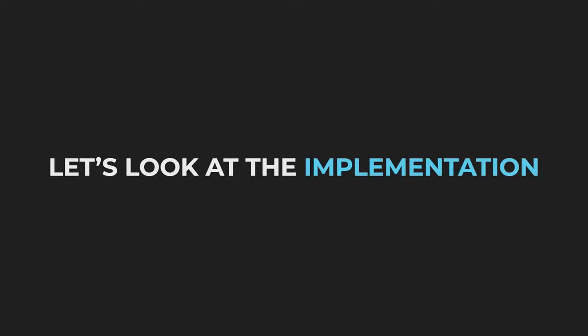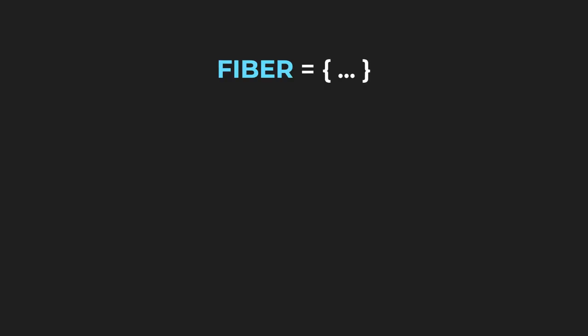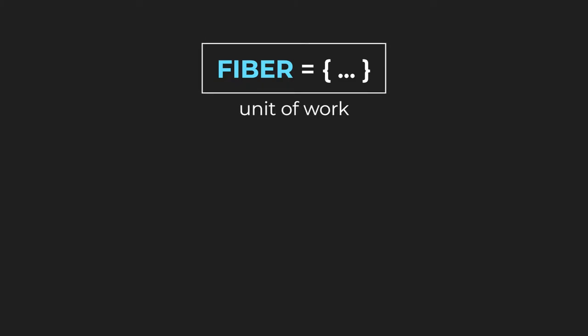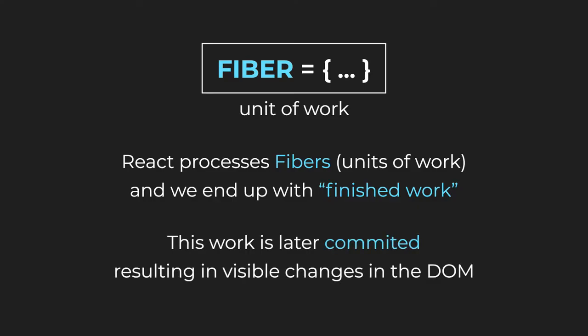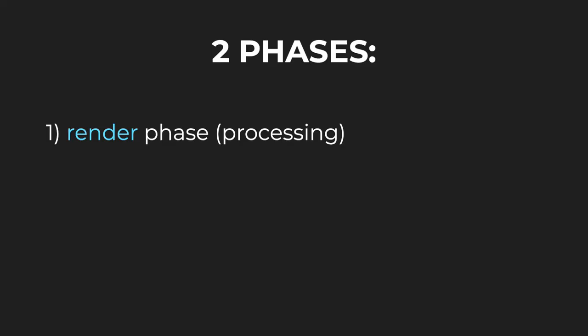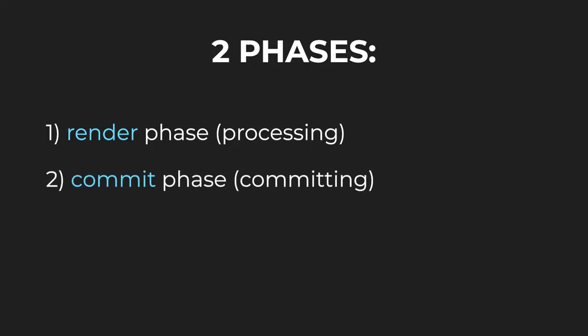Let's look at the implementation itself. Fiber is just a plain JavaScript object with some properties. The core underlying idea is that Fiber also represents a unit of work. React first processes those fibers — those units of work — and we end up with something called finished work. Afterwards, it commits this work, resulting in visible changes in the DOM. This all happens in two phases: the render phase, during which the processing happens, and the commit phase.